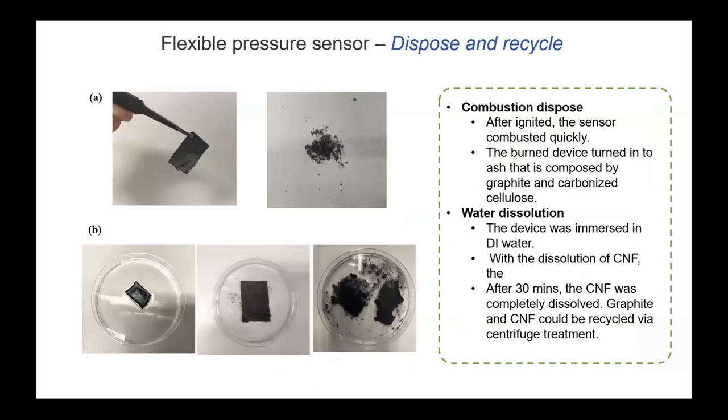Finally, we have demonstrated the recycling and disposal of our device. First, we use the combustion process to dispose of our device. You can see that the cellulose content could be carbonized quickly, and then the device would turn into ashes, which is stable and environmentally friendly. Also, because nanocellulose is water-soluble, we can immerse our whole device into water, and after around 30 minutes, the cellulose will be completely dissolved, and the graphite could be collected through centrifuge and recycled for further utility.